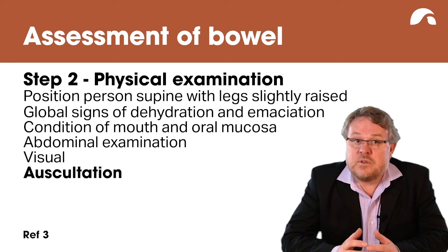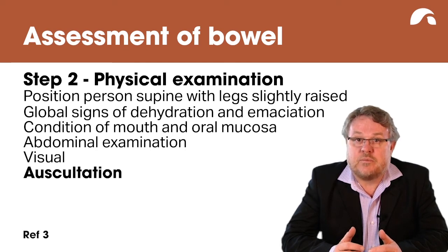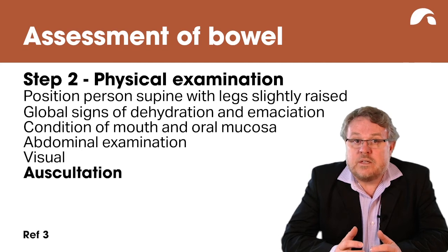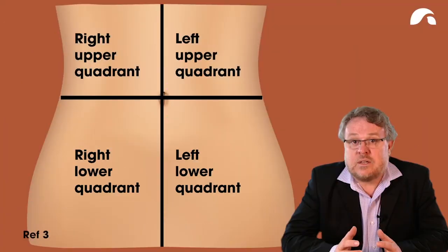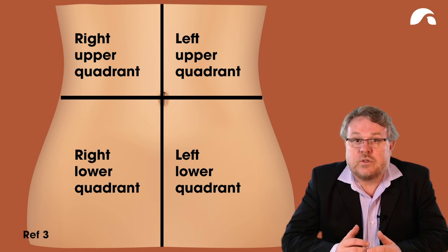The next step is to perform an abdominal auscultation. This must be done before palpation because palpation can stimulate peristalsis. You are listening for bowel sounds. Using a stethoscope, start in the lower right quadrant and move clockwise around the abdomen, following the normal movement of peristalsis.